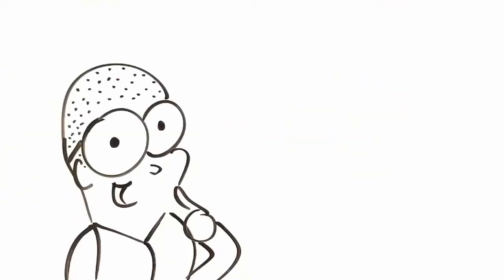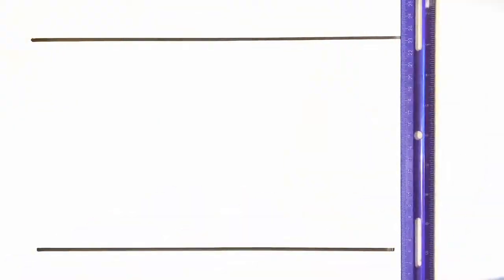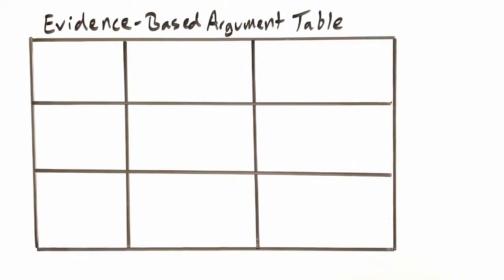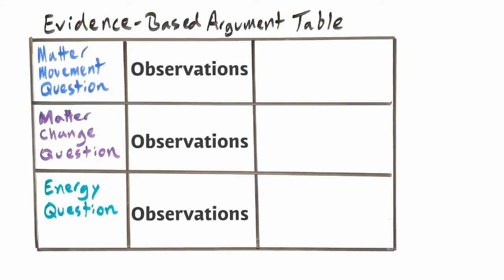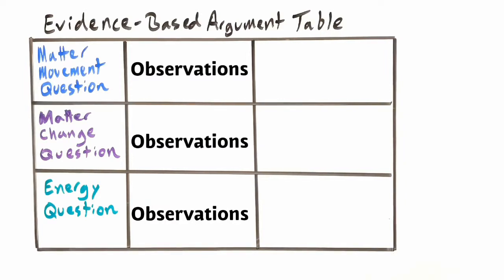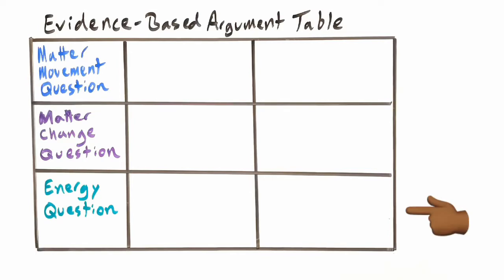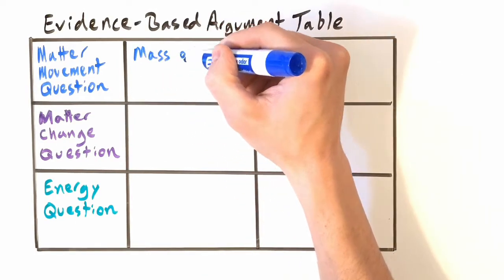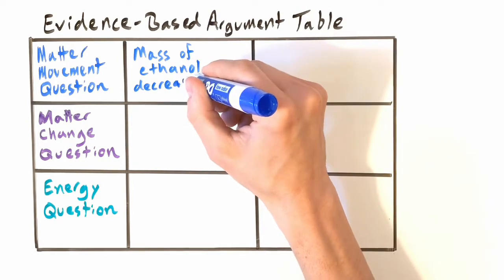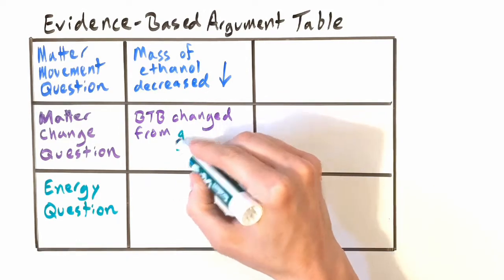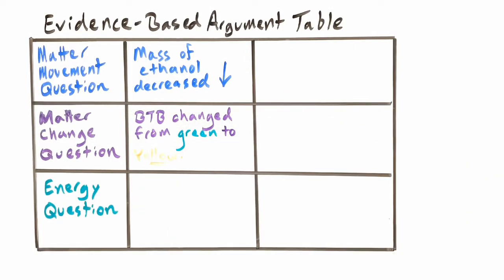Now let's use an evidence-based argument tool to come to some conclusions. In the middle column we'll record any observations that we made regarding each of our questions. On the right column we'll try to come to some conclusions about what each of those observations means. Notice that we added a third row to address any questions we have about energy. As far as the matter movement question, we found that the mass of ethanol decreased. As far as the matter change question, we found that the BTB changed from green to yellow - that means it became acidic.